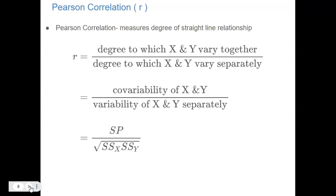Conceptually, the Pearson correlation measures the degree to which the dots fall along a straight line. We do this by creating a proportion: the numerator is the extent to which X and Y are varying together — the covariability of X and Y — set over the degree to which X and Y are each individually varying.